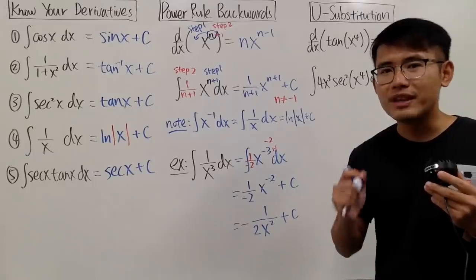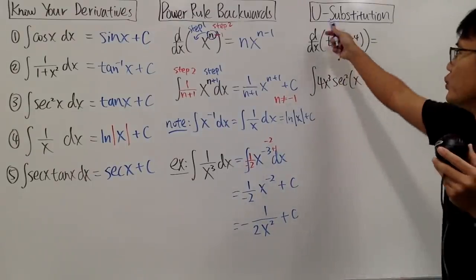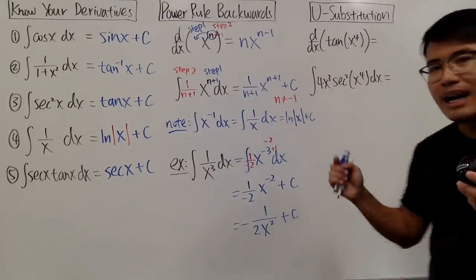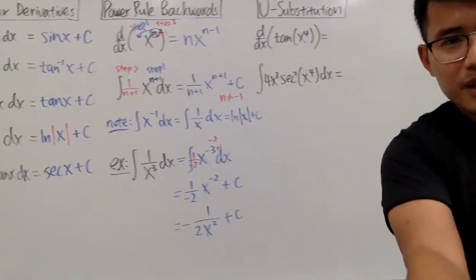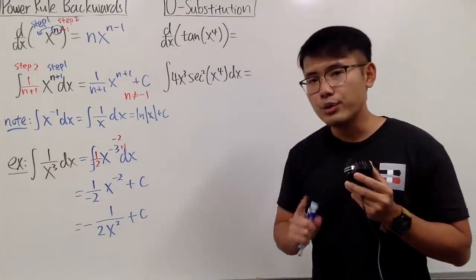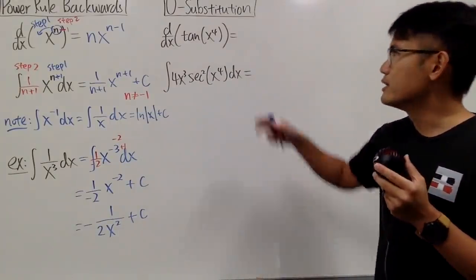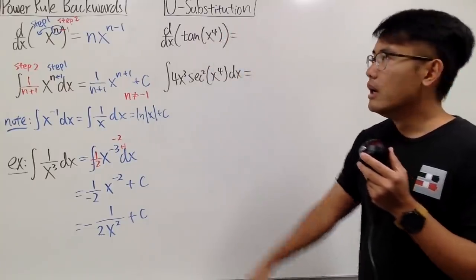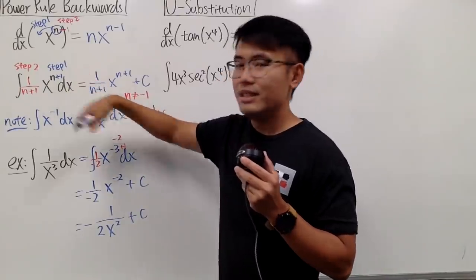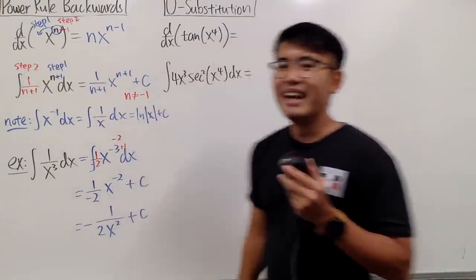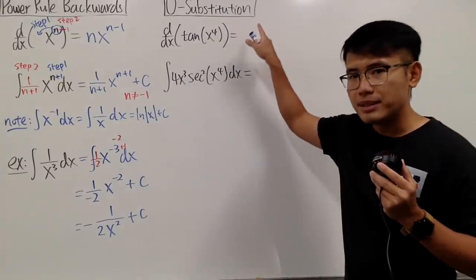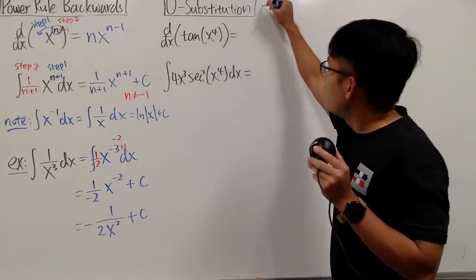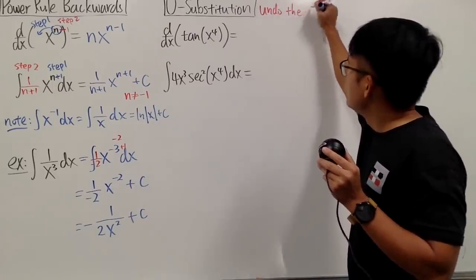Now let's talk about the most fundamental technique of doing integrations — this is called u-substitution. You can use any letter like t or w, but I like u. When we're trying to do an integral, we're finding an antiderivative. The u-substitution is the reverse version of the chain rule when taking derivatives, just like the reverse power rule was the reverse of the usual power rule.